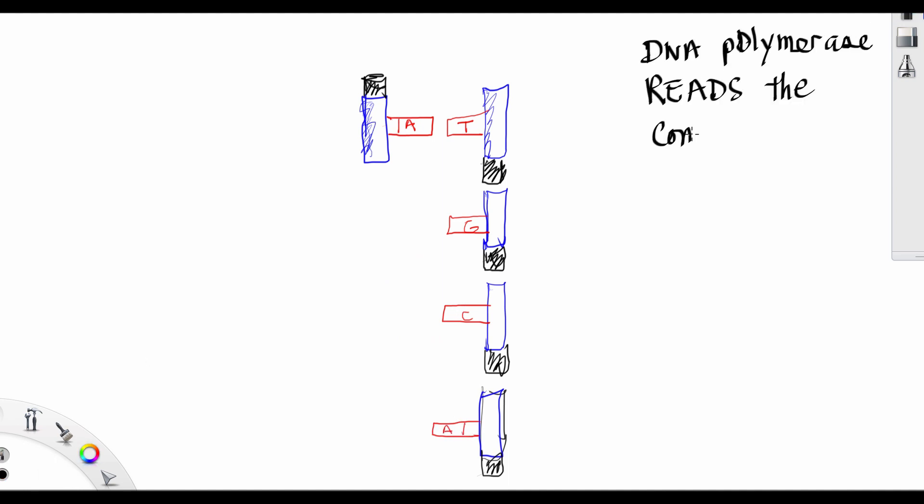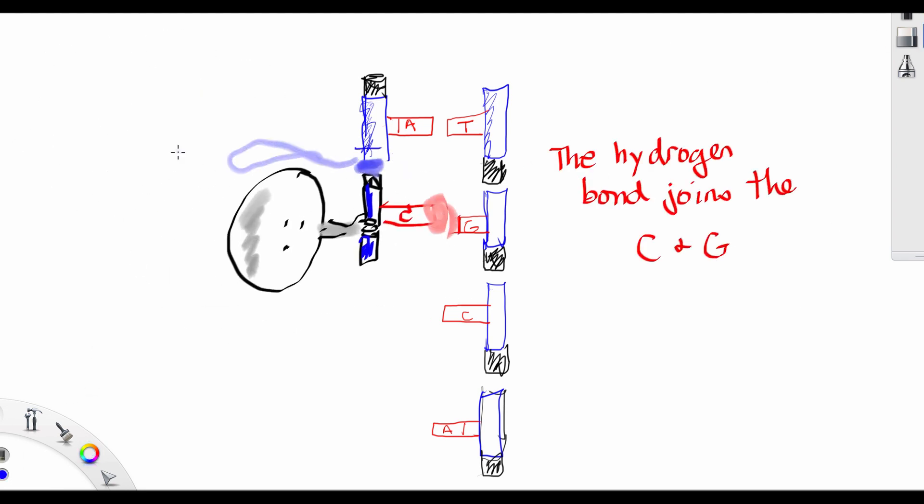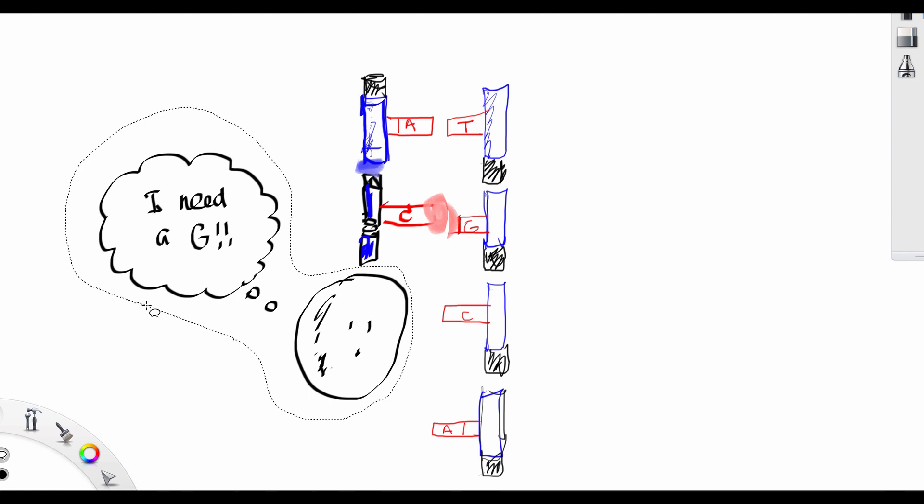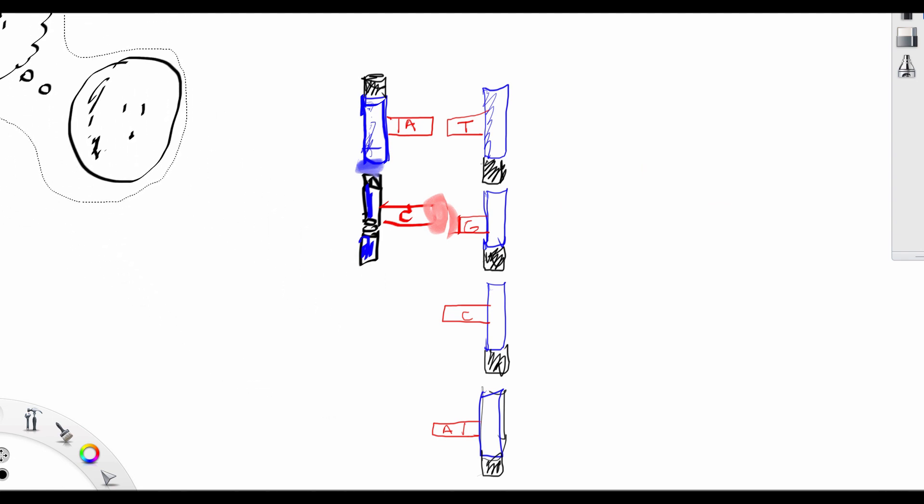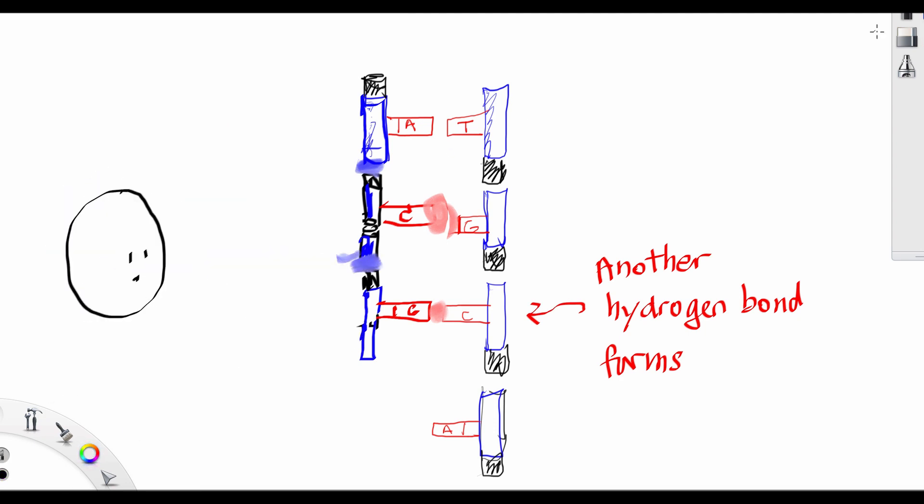DNA polymerase reads the complementary strand and fetches the correct nucleotide. So, for example, it'll fetch a C to fit a G and make a phosphodiester link and a hydrogen bond. It'll read the C and say, I think I need a G. And it'll grab a G and fit it with that C. And finally, it'll fetch a T to fit the A.